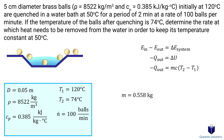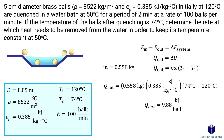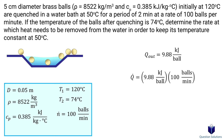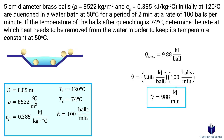Now we can go back to our equation and plug in our values. This answer is for one single ball — the amount of energy released from a single ball in the water. Since we have 100 balls per minute, we multiply this value by 100. So 988 kilojoules of energy must be removed from the water every minute to keep the water temperature constant. That should cover the types of problems you will face when it comes to energy balance with solids and liquids. Thanks for watching and best of luck with your studies.